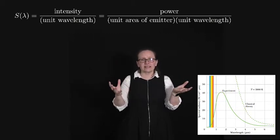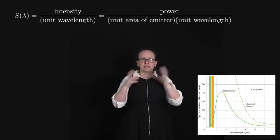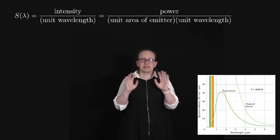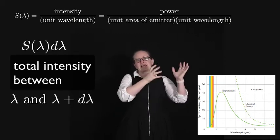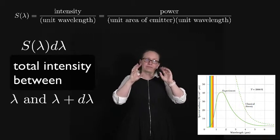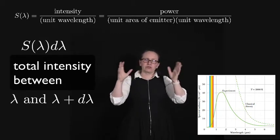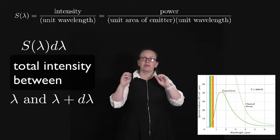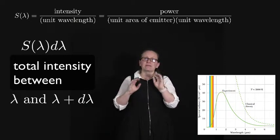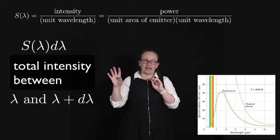Physically if we want to work out what this is in terms of intensity, if we take S(λ) and multiply it by dλ then that is equal to the total intensity of the radiation between the wavelengths λ and λ + dλ.